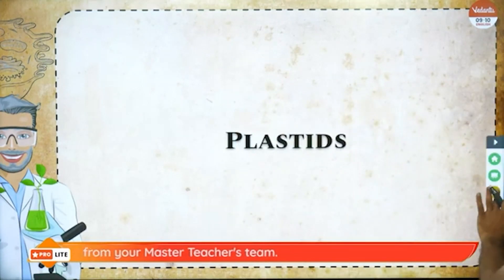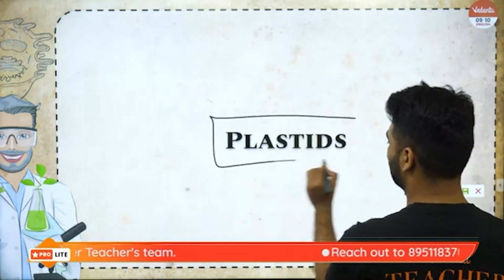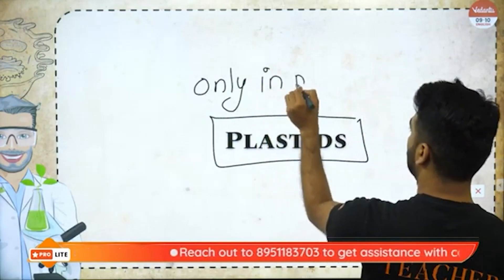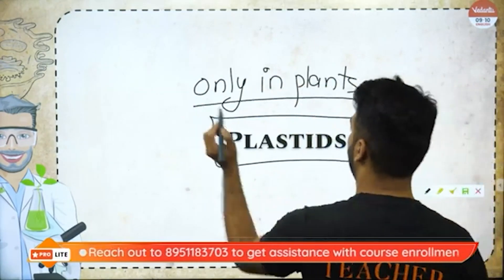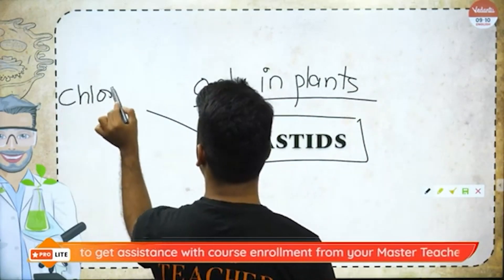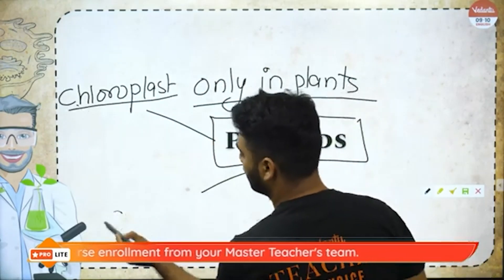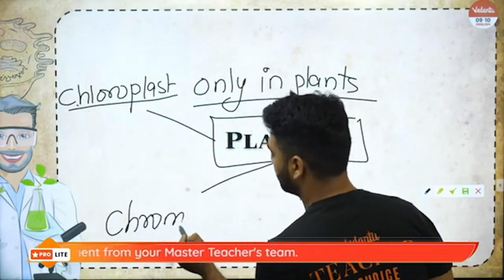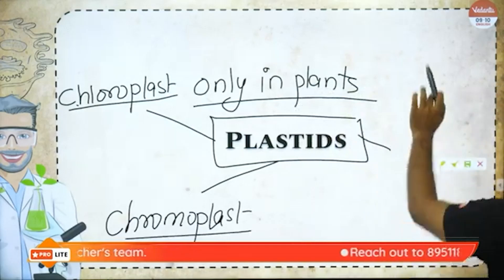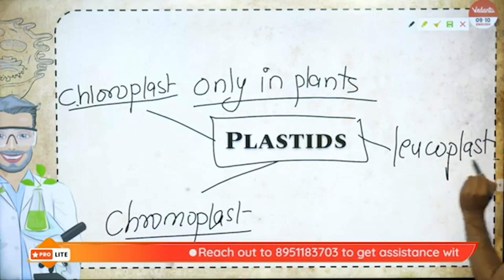Now we'll be talking about plastids. Remember one important thing about plastids: they are present only in plants. You have plastids of three types: chloroplast, chromoplast, and leucoplast.